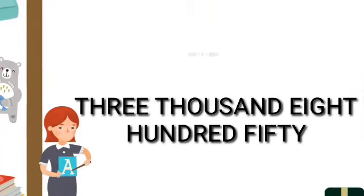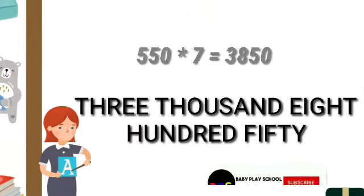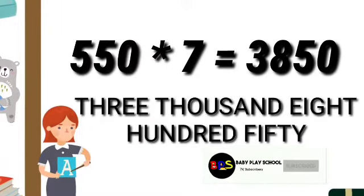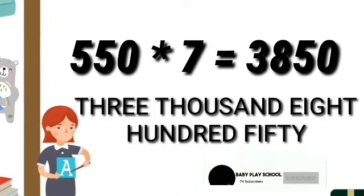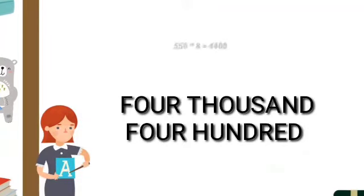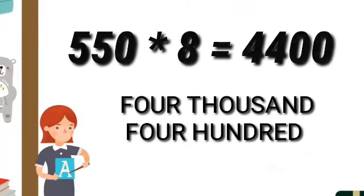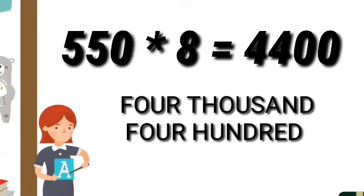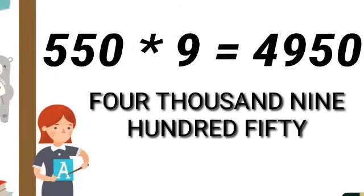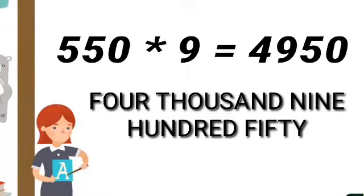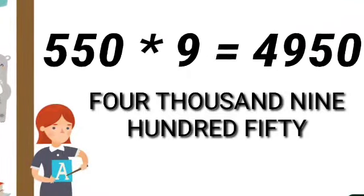550 sevens are 3850. 550 eights are 4400. 550 nines are 4950.